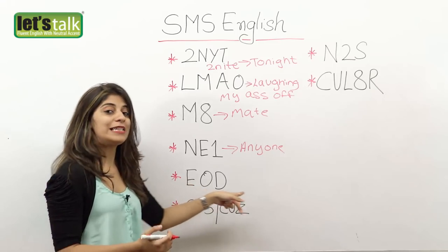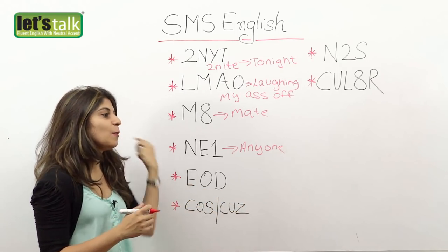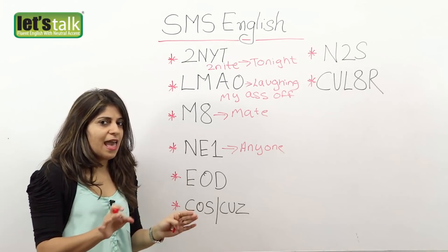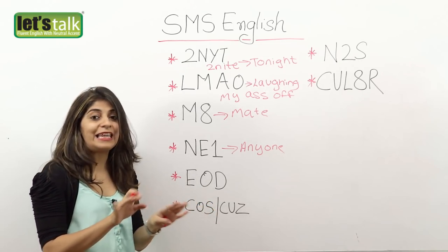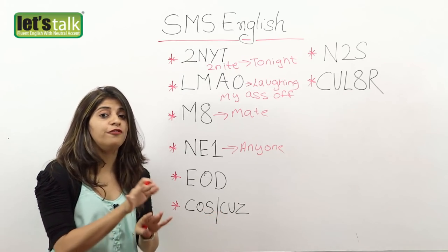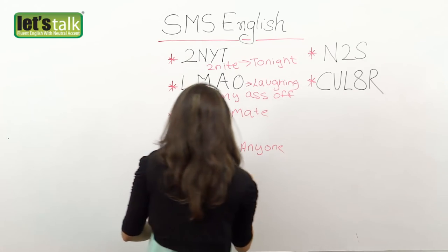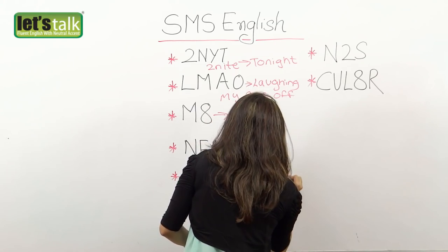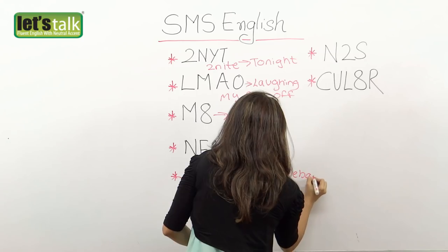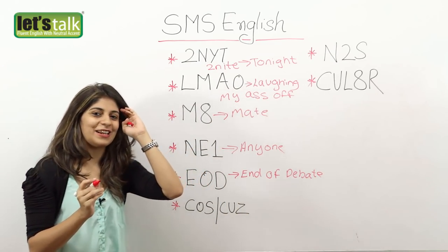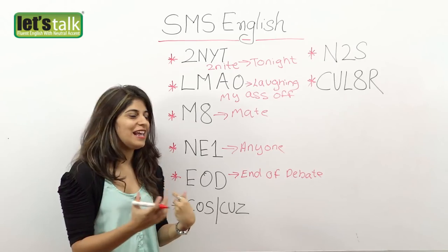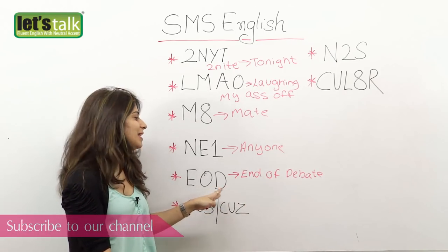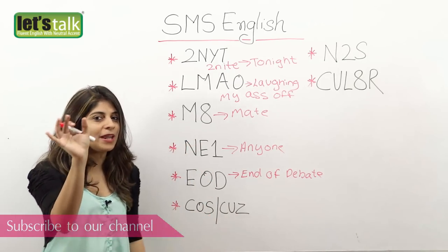Then we have EOD. This is when someone is maybe chatting and having an argument over something and someone writes EOD — it means 'end of debate' or 'end of discussion.' Usually when a boyfriend and girlfriend are having an argument and the boyfriend writes 'okay that's it, EOD' — it basically means end of debate, end of discussion, period.